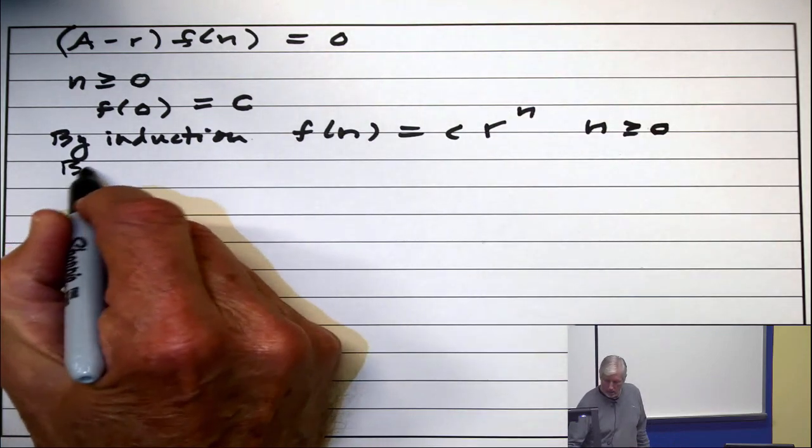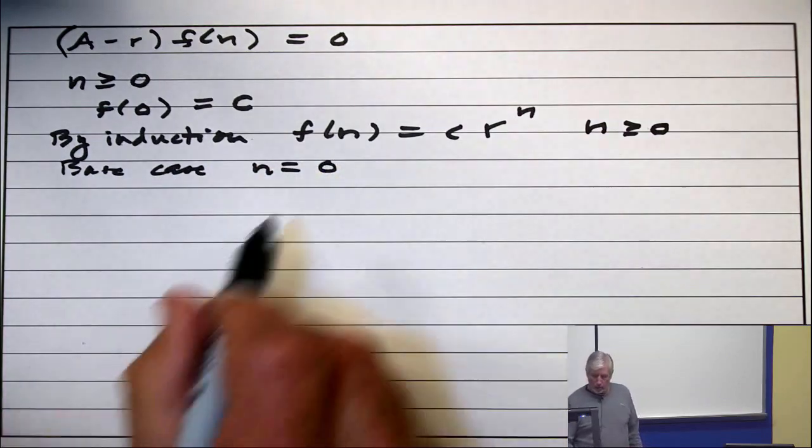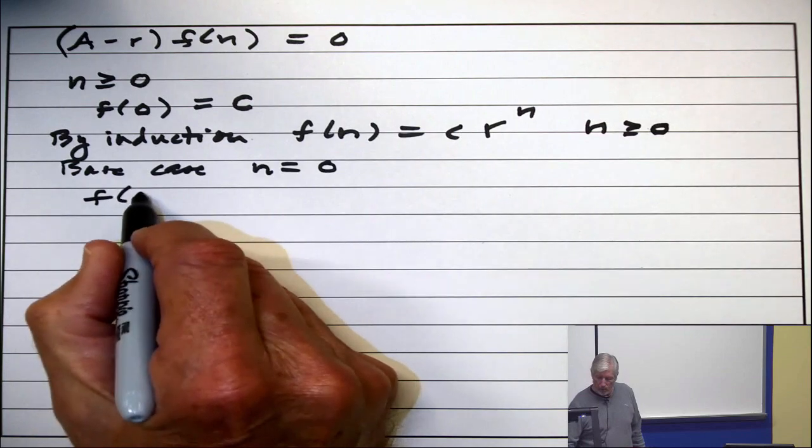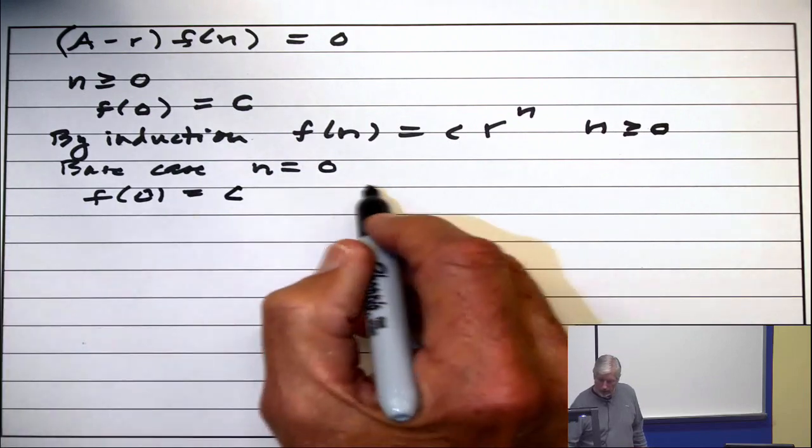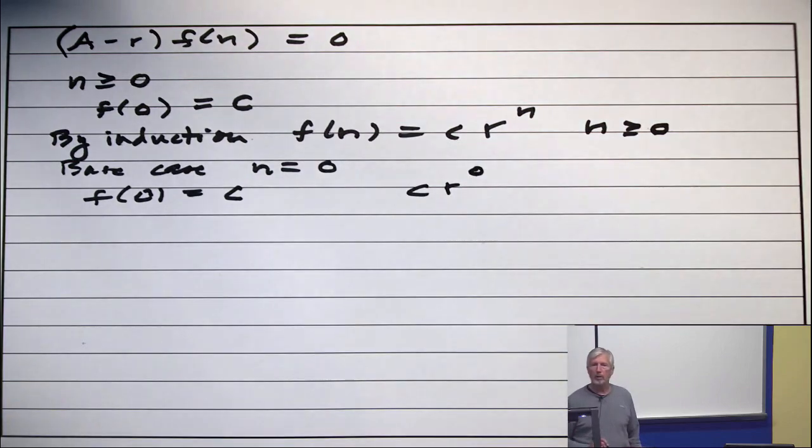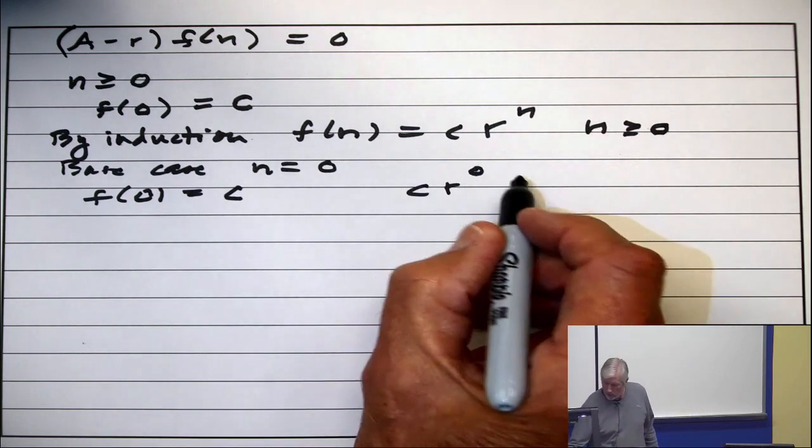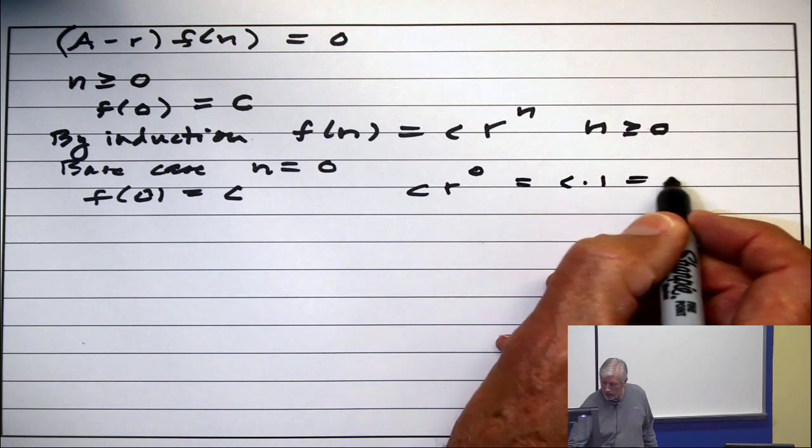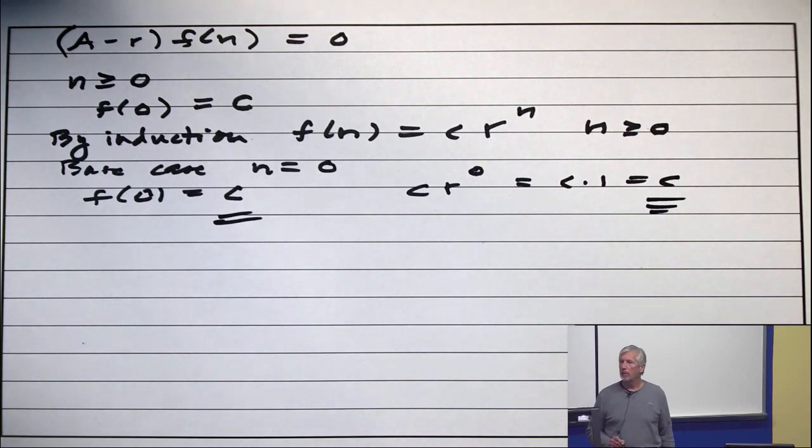Base case: n = 0. On the left-hand side, we have f(0) = c. On the right-hand side, we have c·r^0. But part of the hypothesis was that r ≠ 0, so this is c·1 = c. The left-hand side and right-hand side are equal, so the statement is true in the base case.